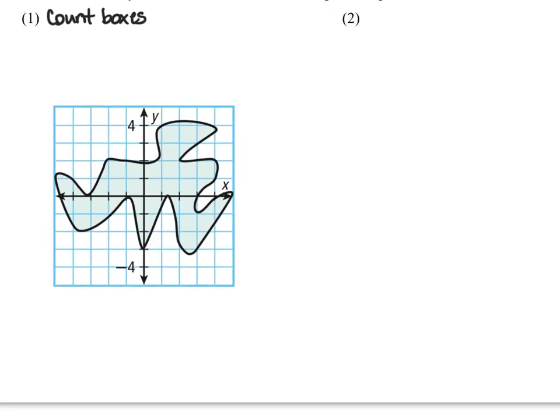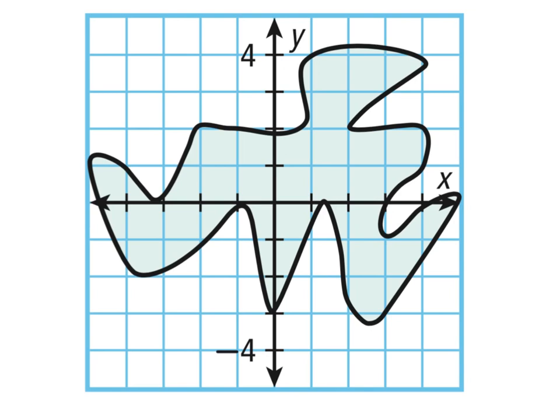Basically the way that we would do that, and I'm going to zoom in a little bit here, is we would document where we have a full square. So for example, we've got one, two, three full squares that I have numbered. What I'd like you to do now is pause the video and number the remainder of the full squares and then turn the video back on so we can continue this question.